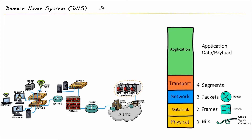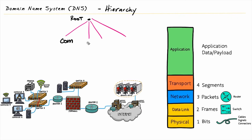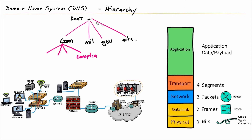Let's begin by taking a look at the hierarchy or the organization regarding how DNS operates. Think of it like an upside-down tree where we have the root at the very top, and then going down from that, we have our top level domains. So we have com, and we have things like mil, and gov, and many more. And then below each of those domains, we have subdomains. I'll just go ahead and draw some off of com, but we have very similar for mil, gov, as well as underneath the dozens and dozens of other top level domains.